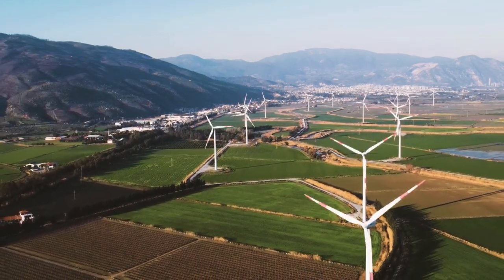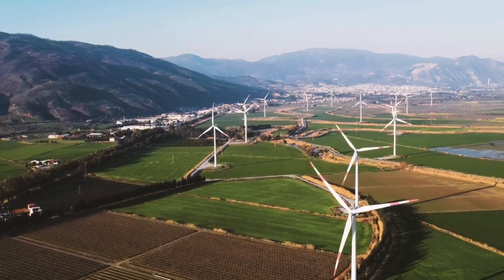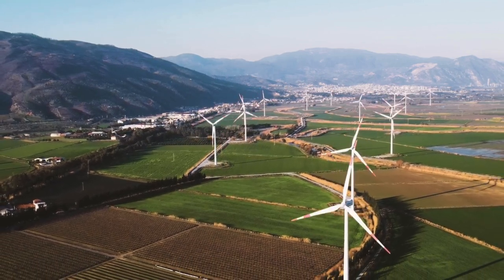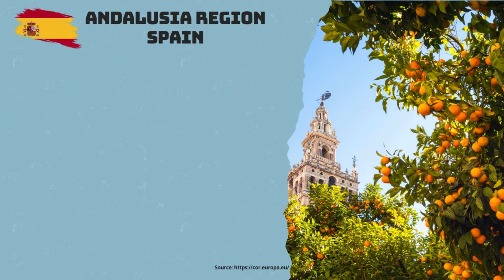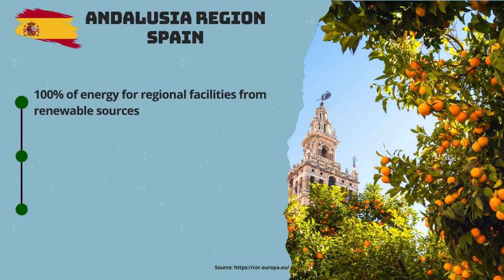Here are some examples of local and regional realities that have applied sustainability principles and solutions in their territories. Andalusia, Spain: Andalusia is a large autonomous region on the southern coast of Spain, rich in hills, rivers, and farmland. Due to its geographical location and climate, the region has great potential for generating renewable energy, and the government of Andalusia has signed an electricity supply contract guaranteeing that 100% of the electricity consumed at the regional administration's facilities must come from renewable sources.